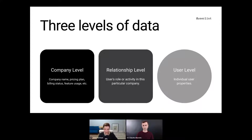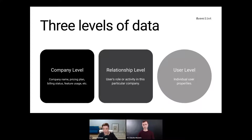There also exists a third level: the relationship level, which allows you to add events and properties for this user in this particular company. This is the unique link that makes the complex many-to-many network relationship possible. At the relationship level, that's exactly where you would store the role of this particular user in this particular company, as well as their events in that company.